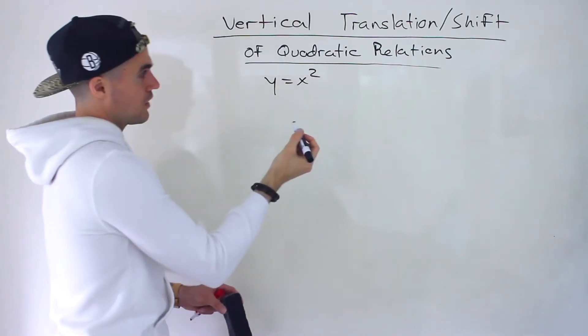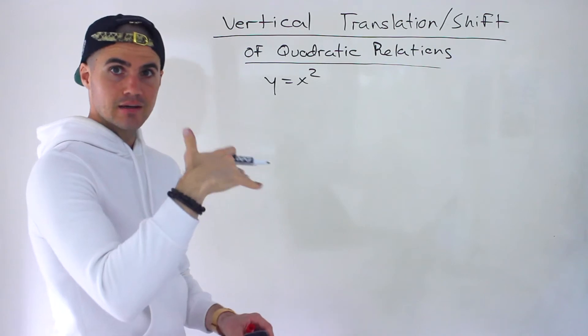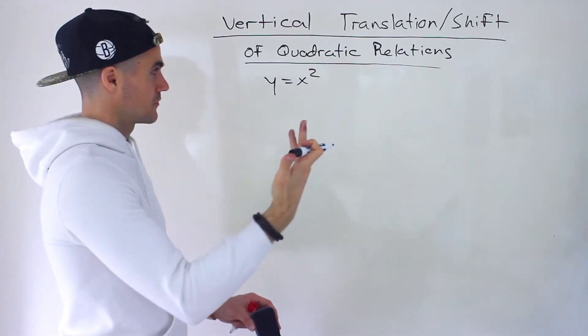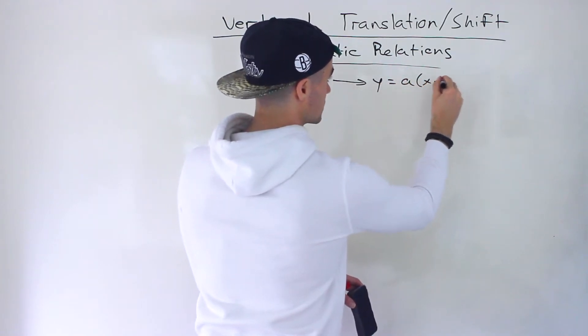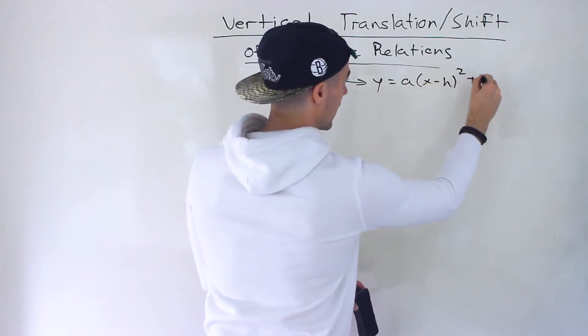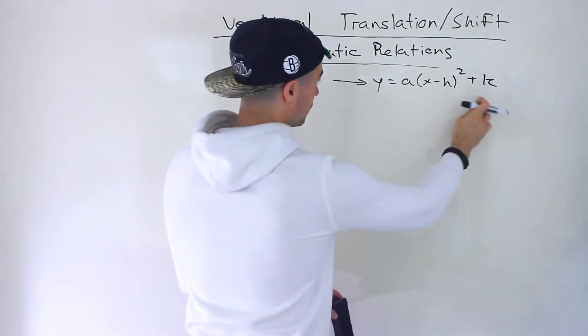So far we've looked at the a and h values of the transformation. Remember that ultimately when we combine all the transformations, we're going to have this format. But we're looking at each of these separately for now.